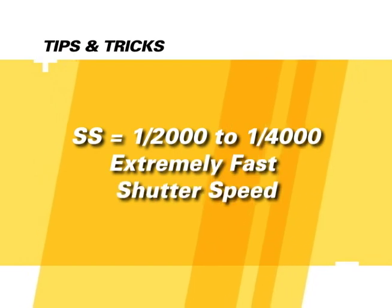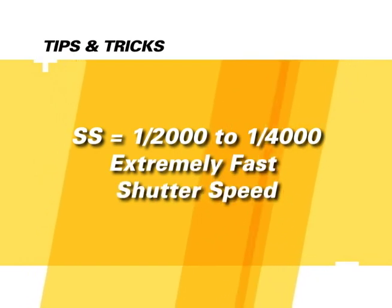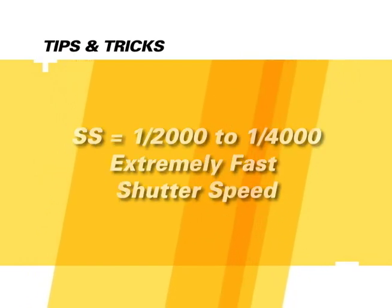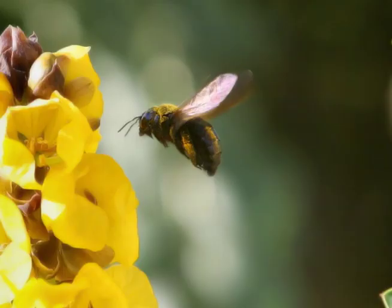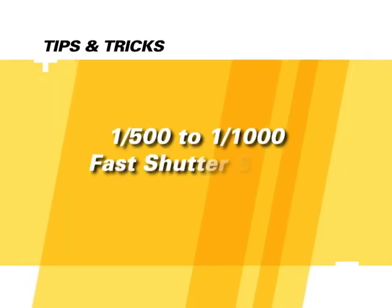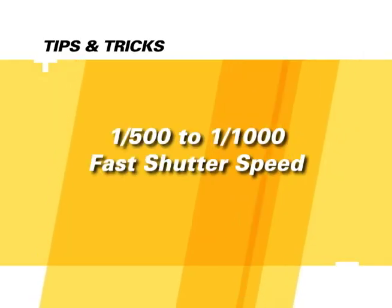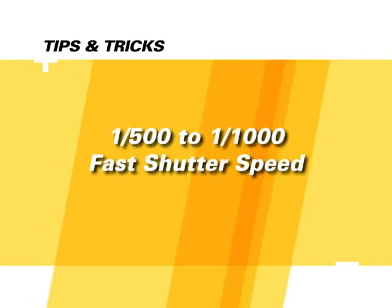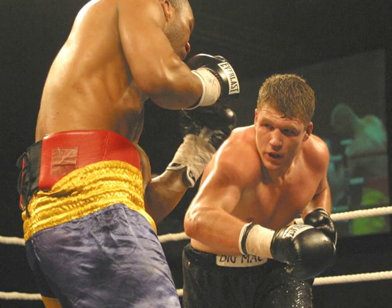A fast shutter speed of 1/2000th to 1/4000th could be used to freeze the wings of a bee flying. A shutter speed of 1/500th to 1/1000th would be ideal for freezing action at a sporting event.